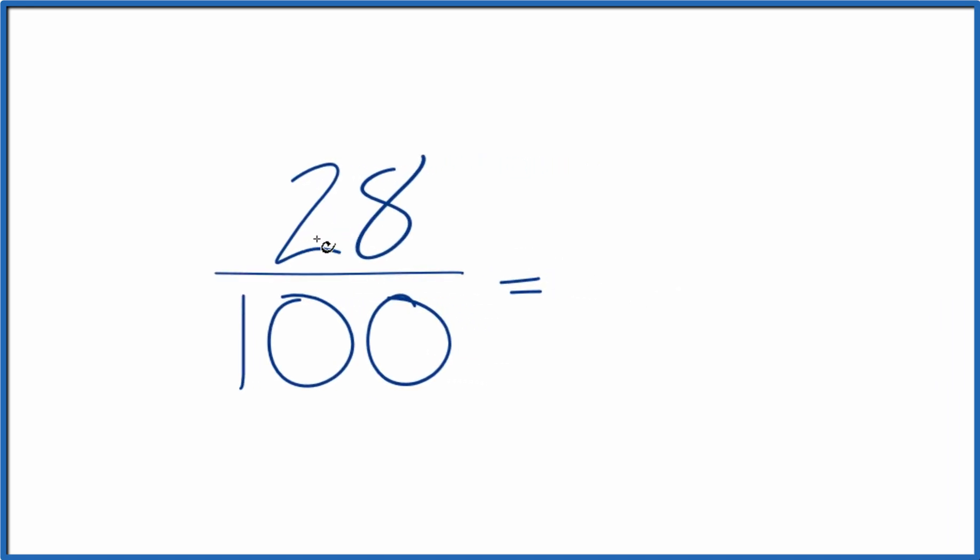So 28 and 100, they're both even, probably easiest just to divide both by 2. 28 divided by 2, that's 14. 100 divided by 2 is 50.